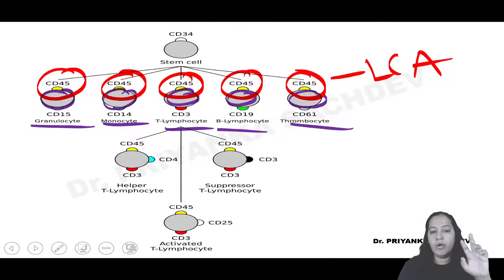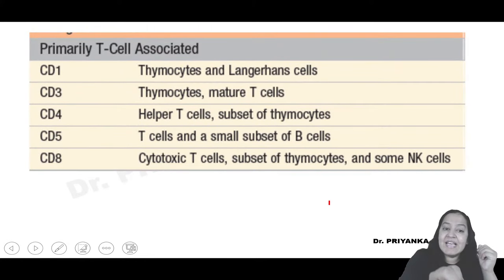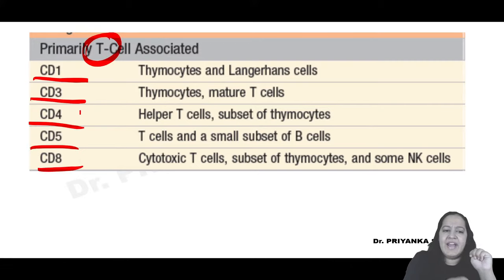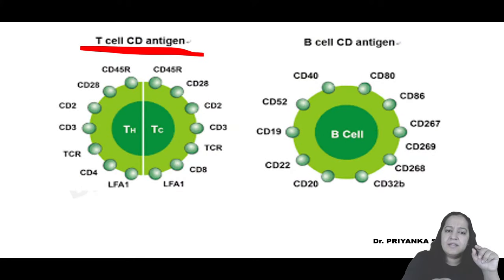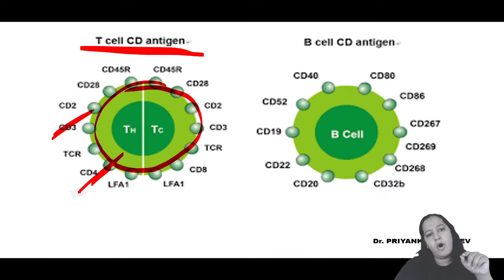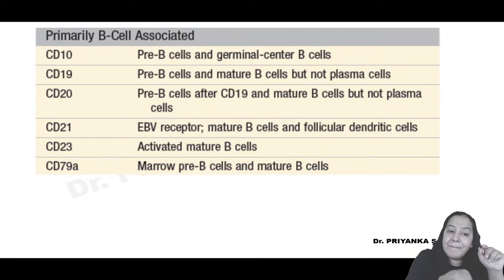T cell markers: CD1, CD3, CD4, CD5, and CD8. Among these, CD3 is the pan-T lymphocyte marker - it is present on all T cells. B cell markers: CD10, CD19, CD20, CD21, CD23, CD24, and CD79A. The mnemonic: starts at 10, jumps to 19, then 20, 21, 23, 24, and then jumps to 79A. You have to learn these lists.